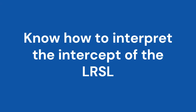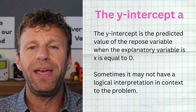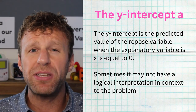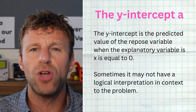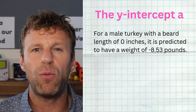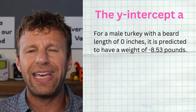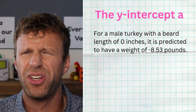Tip number seven: know how to interpret the y-intercept. The y-intercept is the a value. Generically, it's what we predict the y variable to be when x equals zero. Sometimes it makes sense and sometimes it doesn't. In our problem, the y-intercept was negative 8.53. That tells us that when a turkey has a beard length of zero inches, we would predict its weight to be negative 8.53 pounds — which is impossible. The y-intercept often doesn't make sense in context, mostly due to extrapolation, since none of our data had a beard length near zero. But know how to interpret it regardless.